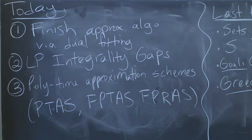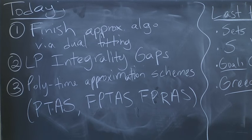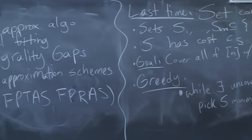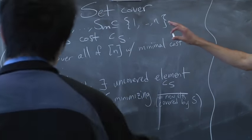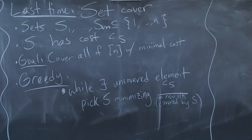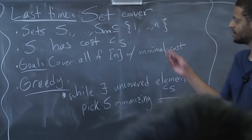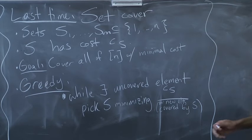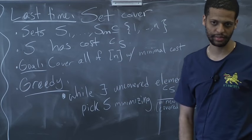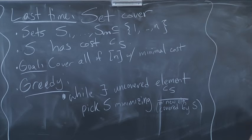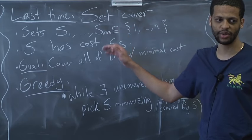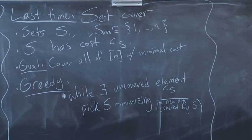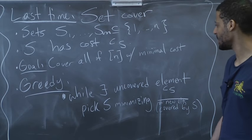Last time I defined the weighted set cover problem. There are m sets, each one is a subset of the universe. The universe for us is 1 up to n, and a set S has a cost CS. The goal, given this input, is to find a sub-collection of the input sets which covers the entire universe. You must cover the universe and minimize the sum of costs of sets you take.